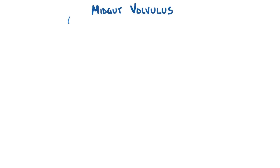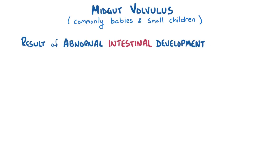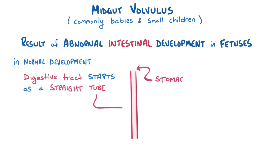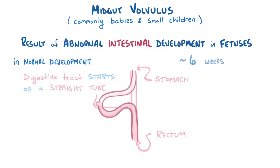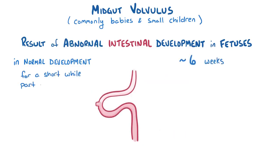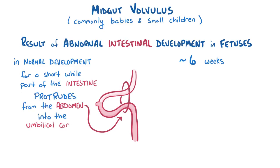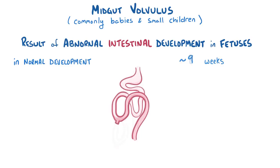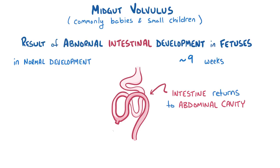Midgut volvulus is most commonly found in babies and small children and is the result of abnormal intestinal development in fetuses. In normal fetal development, the digestive tract starts as a straight tube from the stomach to the rectum. For a little while, a part of the intestine protrudes from the abdomen into the umbilical cord. Once the fetus reaches around 10 weeks, the intestine pulls back into the abdominal cavity and makes two turns, so that it's no longer a straight tube.